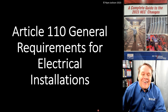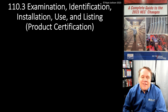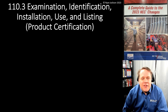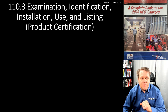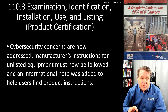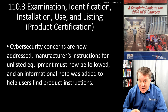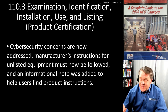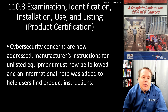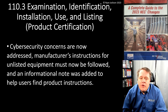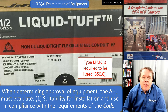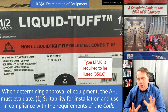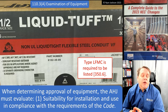First thing is examination, identification, installation, use, and listing — also known as product certification — in Section 110.3. Cybersecurity concerns are now addressed; never thought we'd be talking about that in the NEC. Manufacturers' instructions for unlisted equipment must now be followed, and an informational note was added to help users find product instructions. A lot of people jump into 110.3(B) because that's the rule that says you have to use listed products in accordance with the listing instructions.